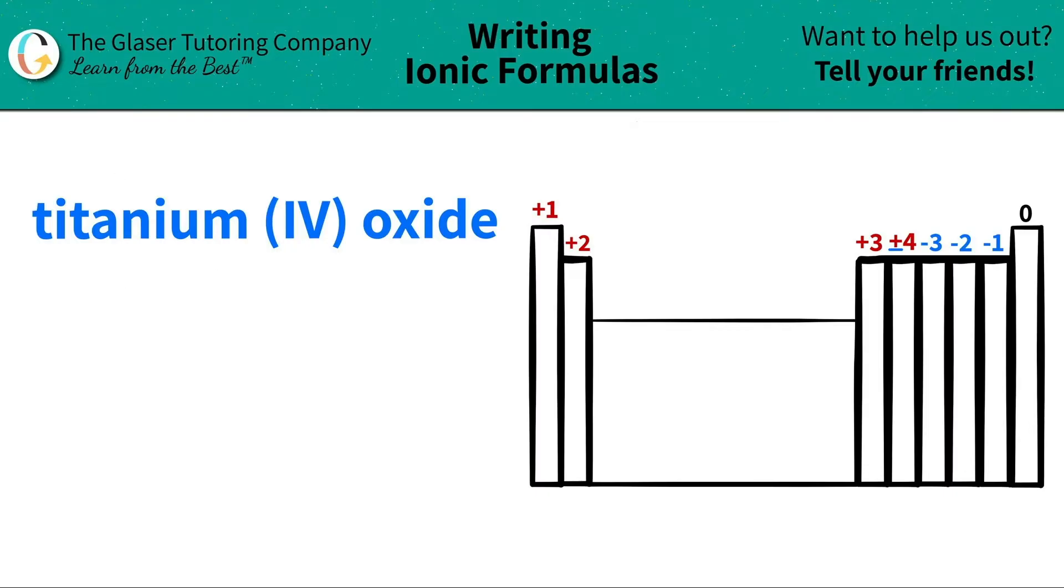I see that I have titanium first, and I'm going to scan the periodic table to see where titanium is. Titanium is right over here. Titanium is a Ti. So that's the first thing I'm going to write down. I got titanium. That's a Ti.